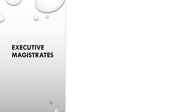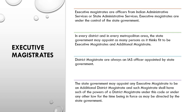The next is the Executive Magistrate. People often get confused between the Judicial Magistrate and the Executive Magistrate. Executive Magistrates are officers from the Indian Administrative Services or state administrative services. Executive Magistrates are under the control of the state government. In every district and in every metropolitan area, the state government may appoint as many persons as it thinks fit to be Executive Magistrates and additional magistrates. The District Magistrate — that is, DM or Collector — is always an IAS officer appointed by the state government. The state government may appoint any Executive Magistrate to be an Additional District Magistrate with such powers of the District Magistrate as may be directed by the state government.